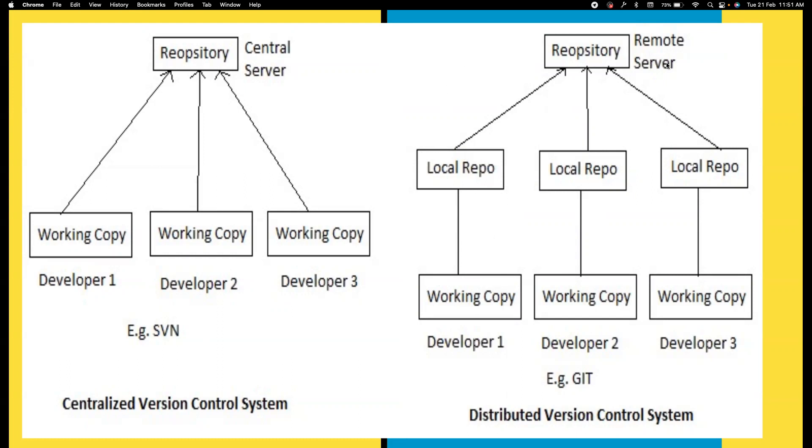But in that diagram I never mentioned a staging area. This is a high-level diagram, and there is a staging area between your working copy and local repo.